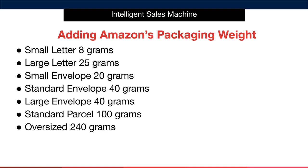In simple terms, if your item was classified as a small envelope due to the dimensions of your product, we know that the weight of a small envelope within Amazon's system is 20 grams. We'll then take the weight of the individual item that our supplier gave us and add 20 grams to get the total packaged weight of an individual item ready to be sent to a customer. This total weight figure is the one we must place in the Google Sheet when calculating profitability.